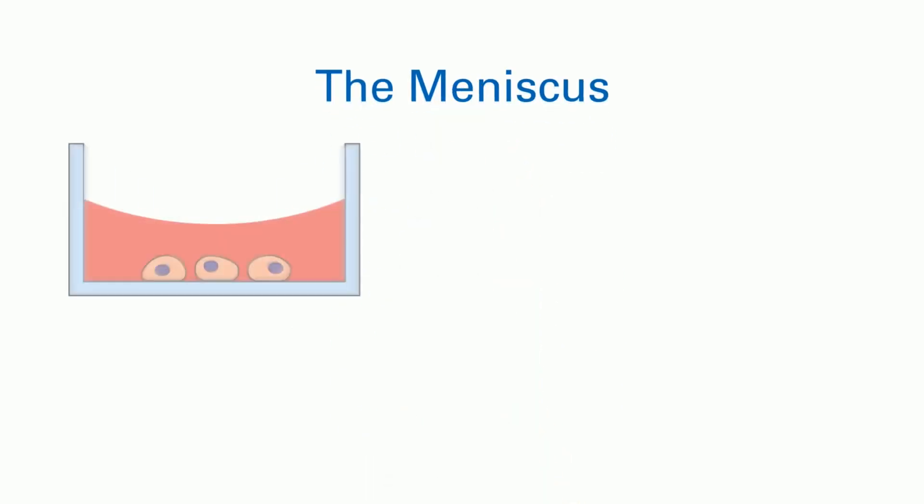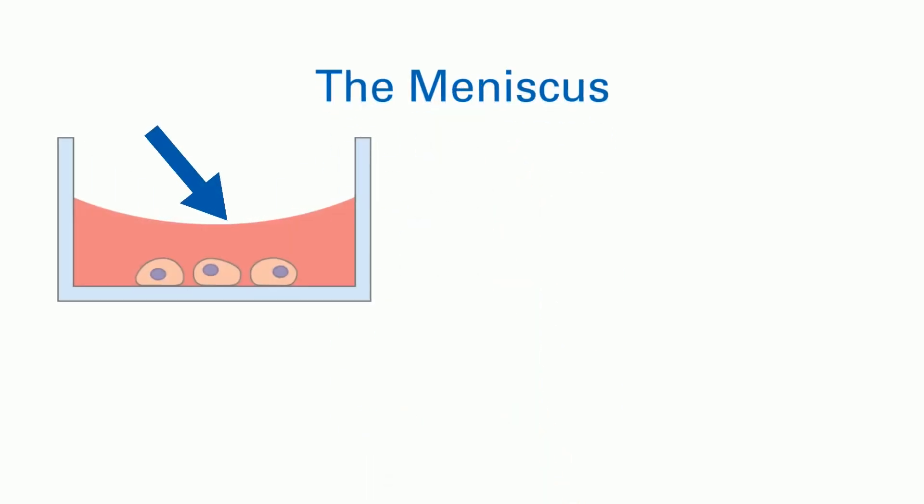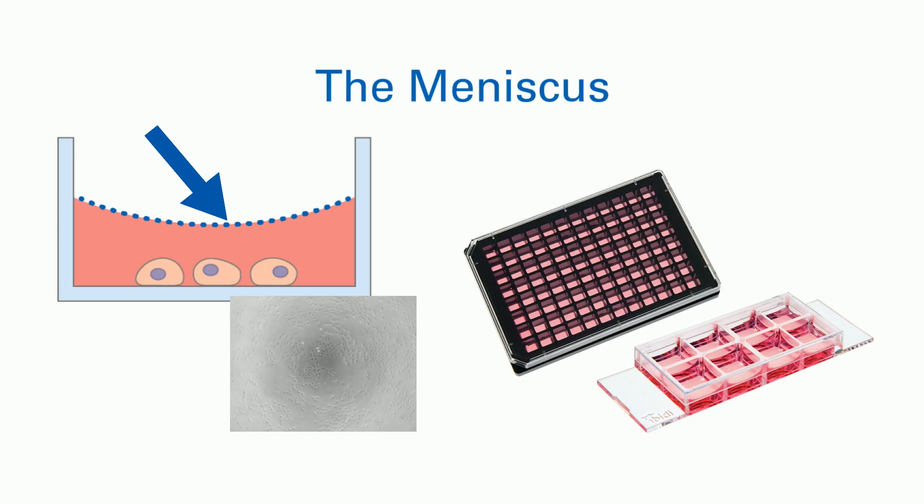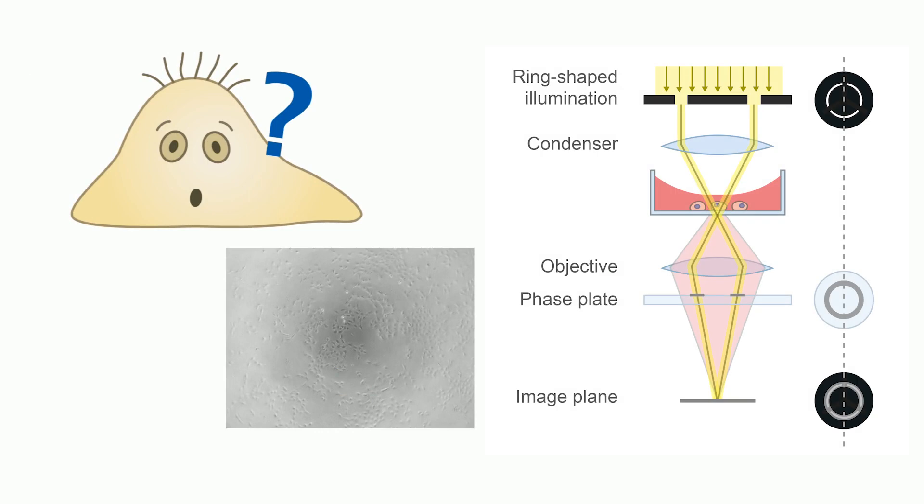The meniscus. The meniscus formation of the air-water interface is a natural effect that can disturb phase contrast microscopy when culturing cells in small wells. How does the meniscus cause blurry edges? The meniscus acts like a lens.